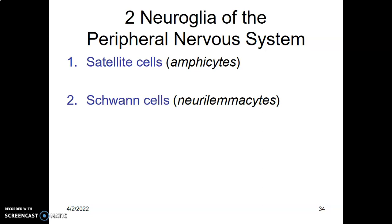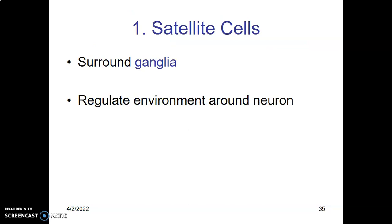The peripheral nervous system has two types of neuroglial cells: the satellite cells, which are the amphicytes, and the Schwann cells, which are also called the neurilemocytes. The satellite cells are support cells within the ganglia — they regulate the environment around the neuron, ensuring a good metabolic environment by regulating nutrients, oxygen, and carbon dioxide around the ganglia.